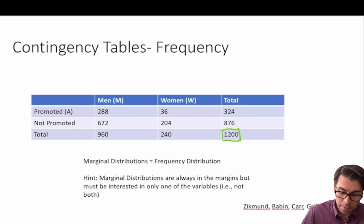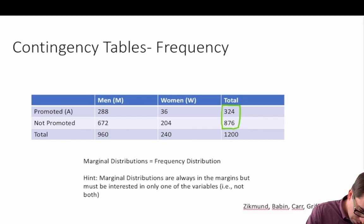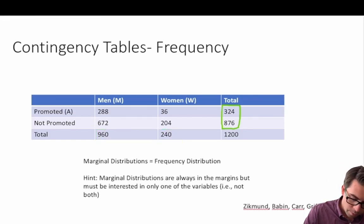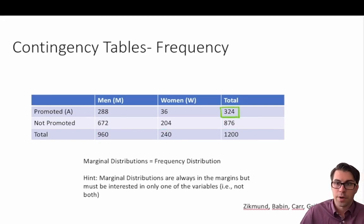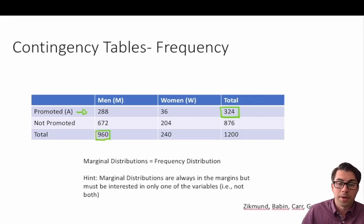The values in the totals of the rows or the totals of the columns are called our marginal distributions. This is the total number of observations in each category. For example, 324 is the total number of people who were promoted, and 960 is the total number of men in the sample.